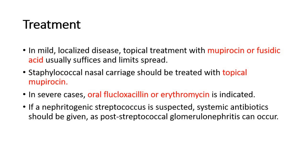For treatment of impetigo, in mild localized disease, topical treatment with mupirocin or fucidic acid usually suffices and limits spread. In severe cases, oral flucloxacillin or erythromycin is indicated. If a nephritogenic streptococcus is suspected, systemic antibiotics should be given, as post-streptococcal glomerulonephritis can occur.